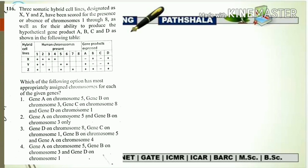Trisomatic hybrid cell line designated as XYZ have been scored for the presence or the absence of chromosome number 1 through 8, as well as for their ability to produce the hypothetical gene products A, B, C, and D as shown in the following table.